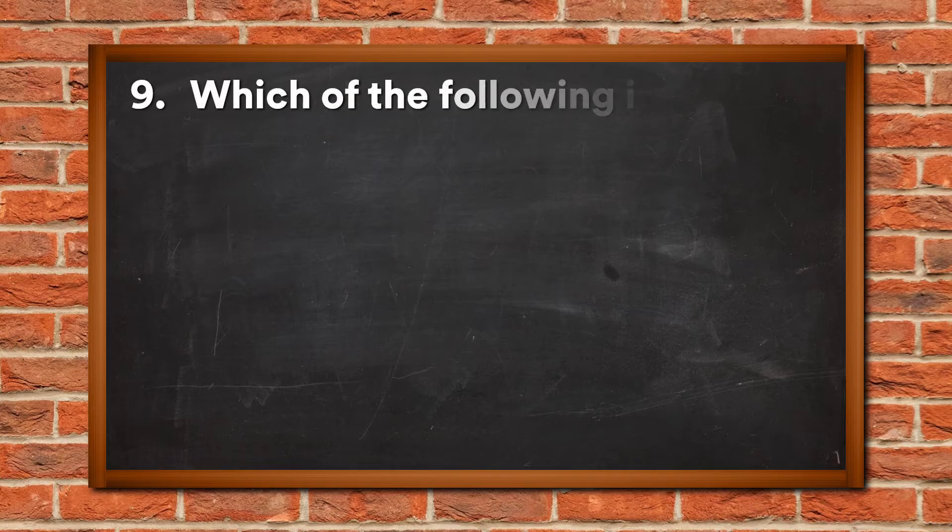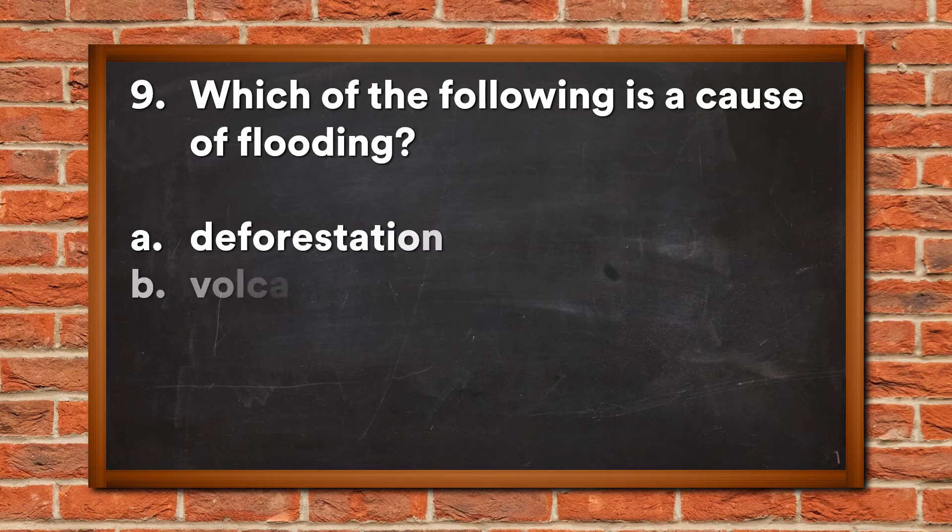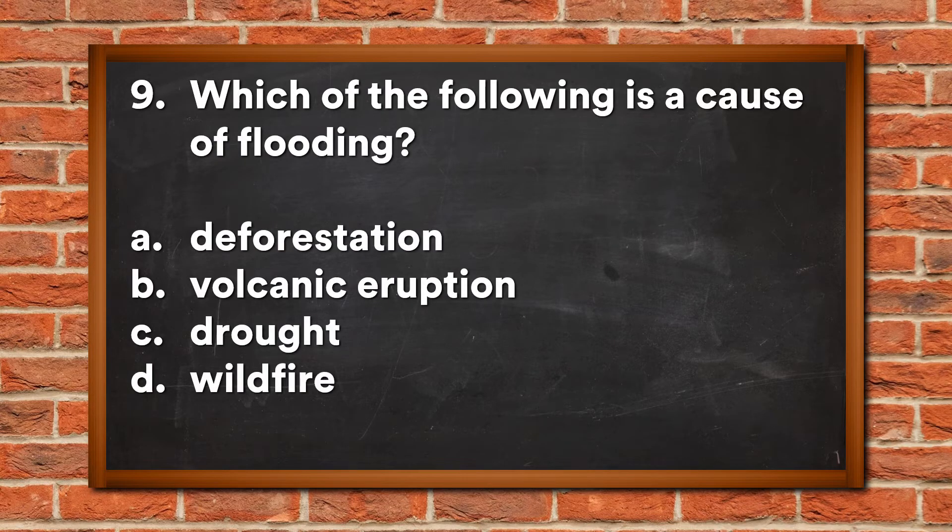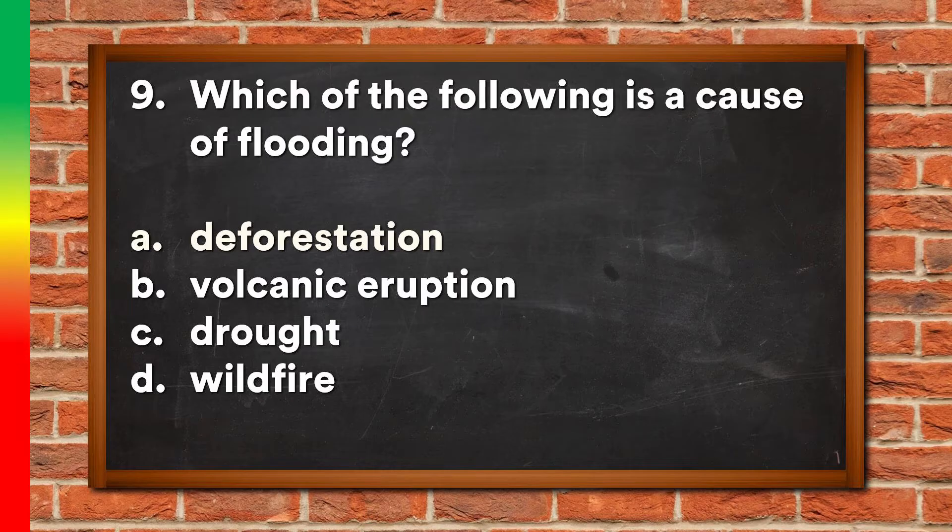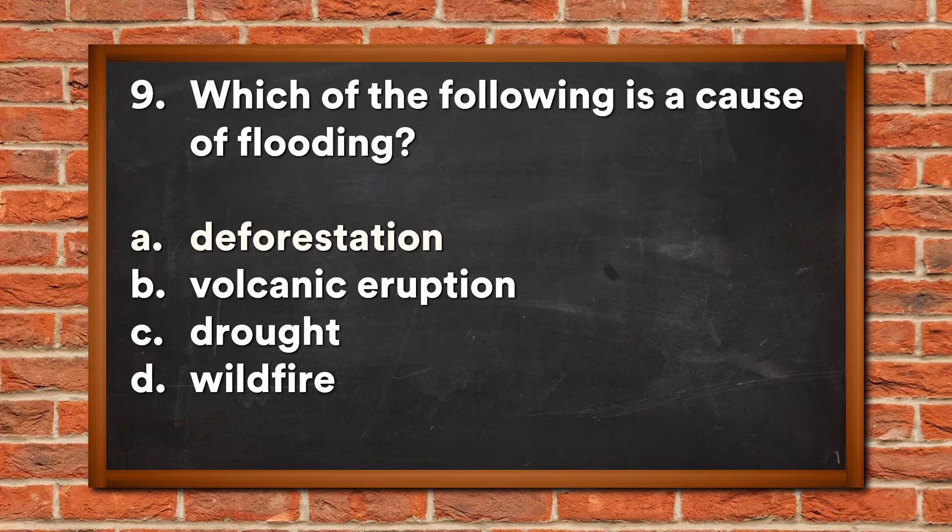Question 9: Which of the following is a cause of flooding? A. Deforestation, B. Volcanic eruption, C. Drought, D. Wildfire. The answer is A, Deforestation.